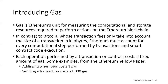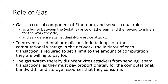For example, operations performed by a transaction or a contract generally cost a fixed amount of gas. Some examples from the Ethereum yellow paper: adding two numbers costs 3 gas, sending a transaction costs 21,000 gas, calculating a hash costs about 30 gas and 6 gas for each additional 256 bits of data being hashed. Gas is a crucial component of Ethereum and serves multiple roles: it's a buffer between the volatile price of Ethereum and the reward to miners, and a defense against denial of service attacks. It also prevents accidental or malicious infinite loops or other computational wastage in the network.